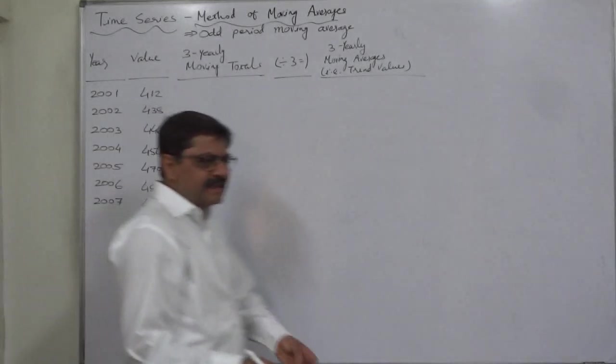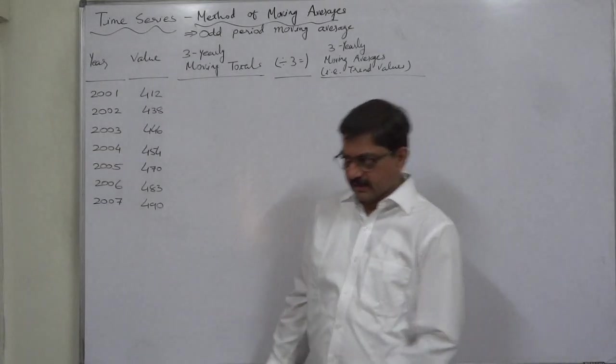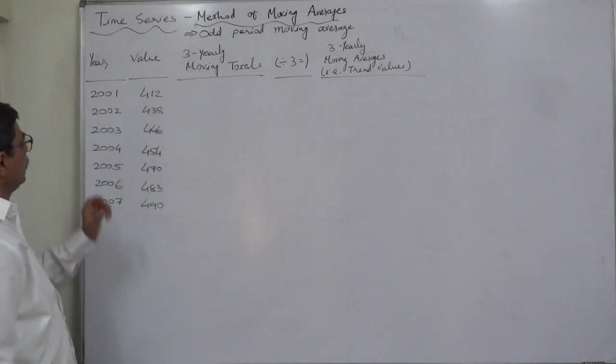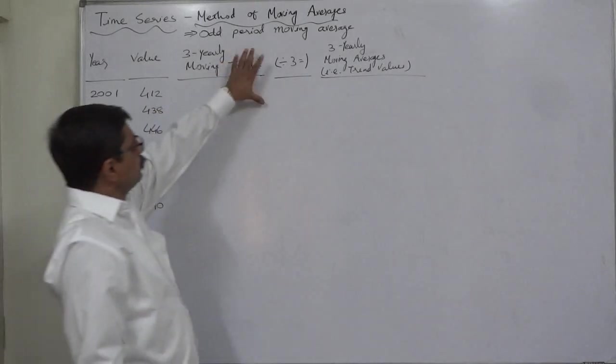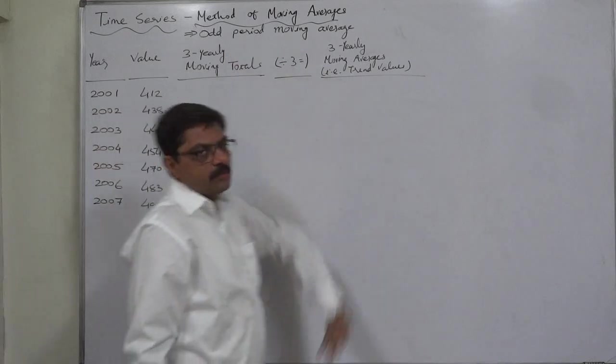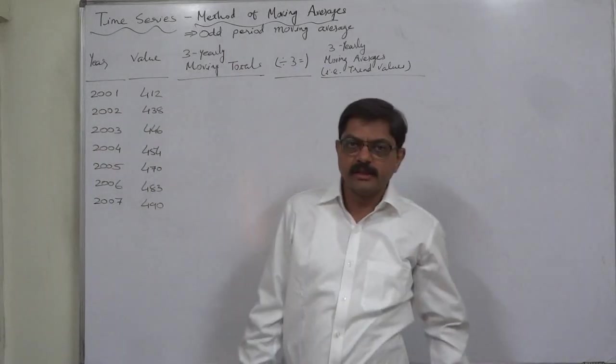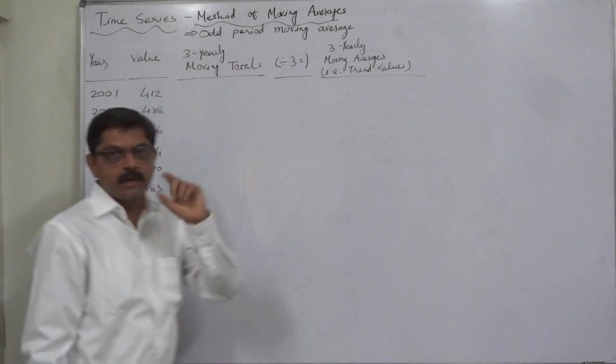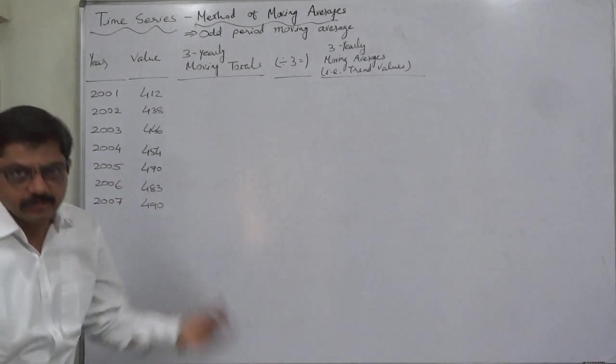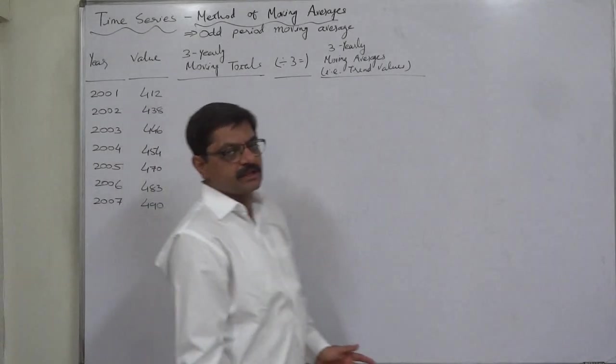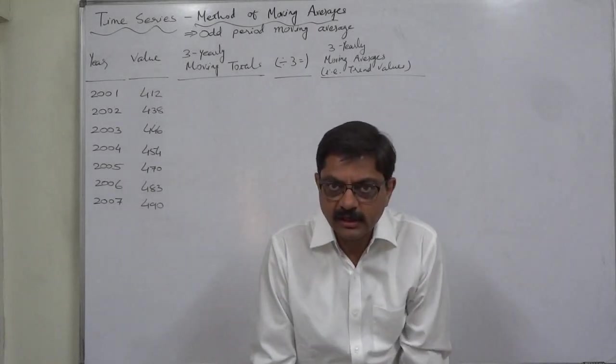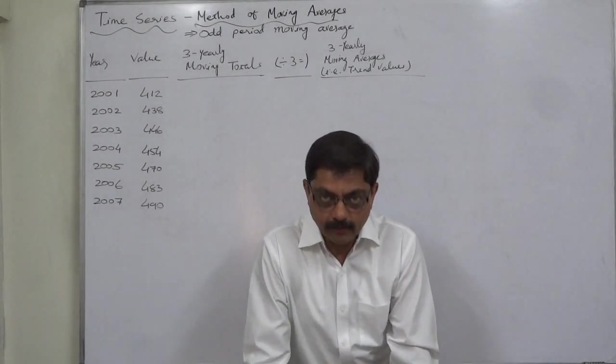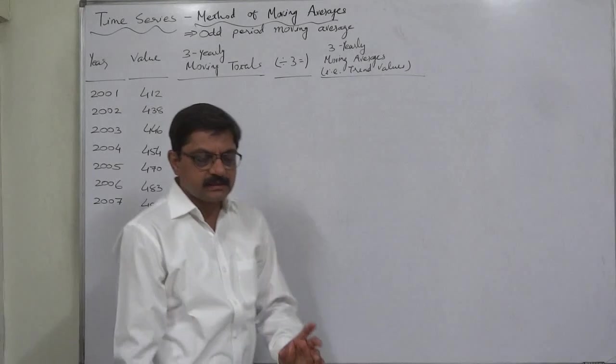First of all we are going to learn odd period moving average. Odd period moving average means to consider the odd number of periods - three, five, seven, etc. As this is the first case, we are going to start with the three yearly moving average. That is very easy but useful to discuss the important points of how to find moving average.